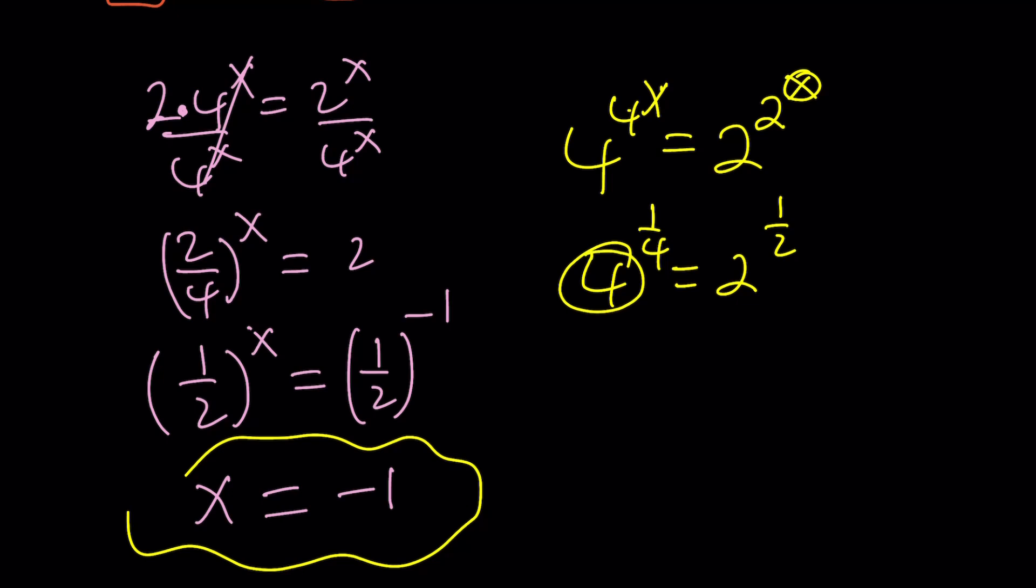Why are these equal? Because if you think about 4 as 2 squared, this is 2 to the power 2 fourths, which is the same as that one. So negative 1 is a solution.